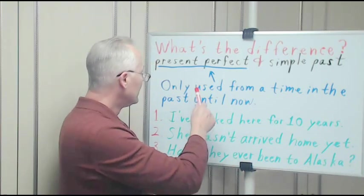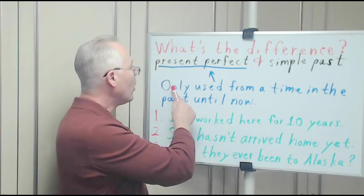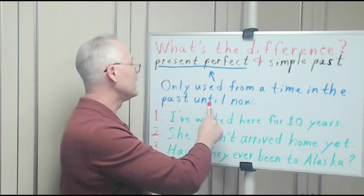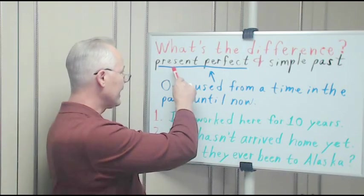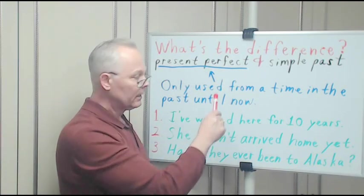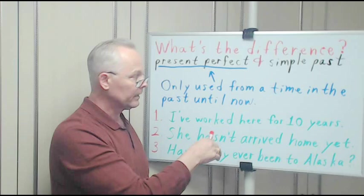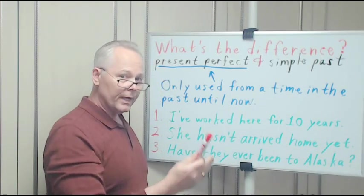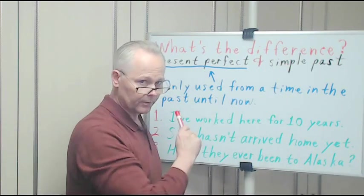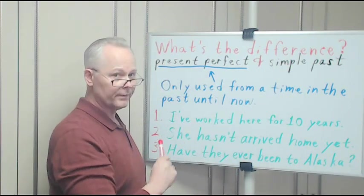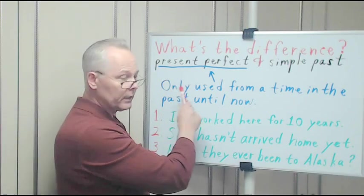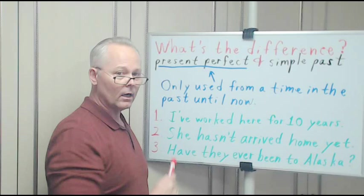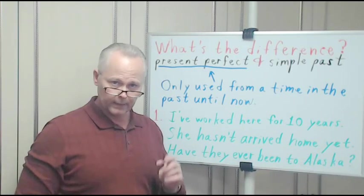Only used from a time in the past until now—that's the present perfect. Now I'm going to put up another board here in a moment, and we're going to do the same thing with the simple past. But we're comparing this present perfect and the simple past. Okay, present perfect here, it's only used from a time in the past until now.